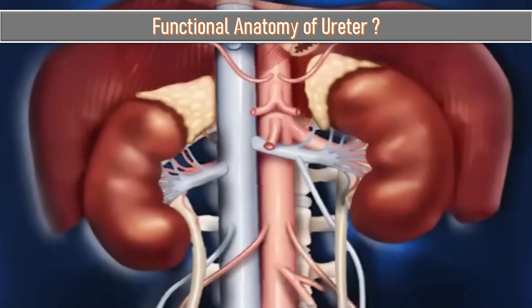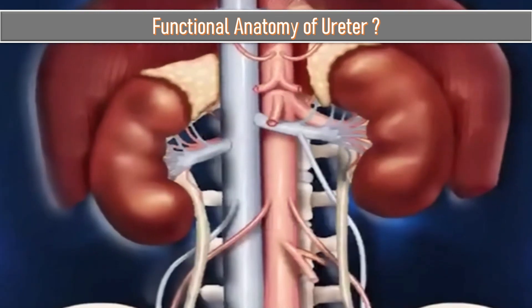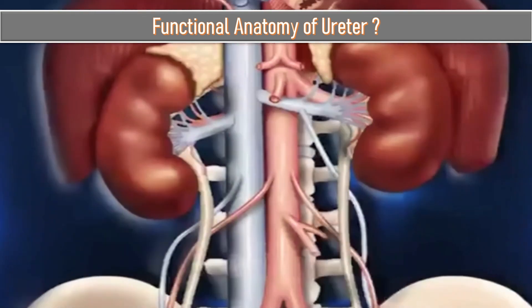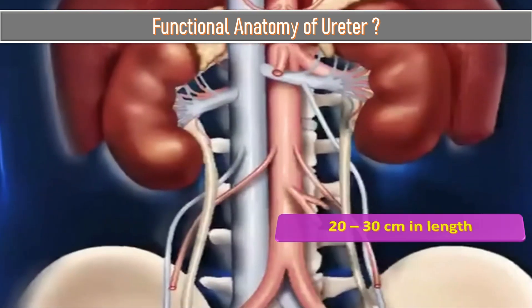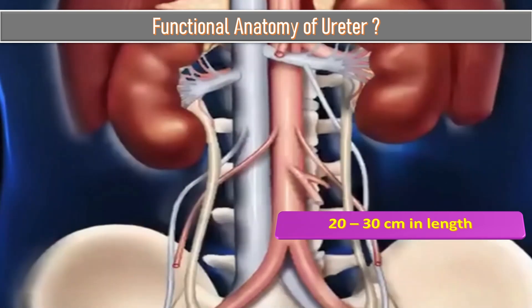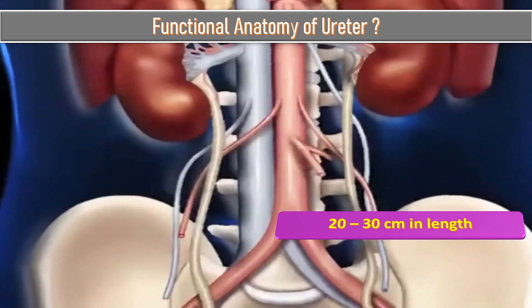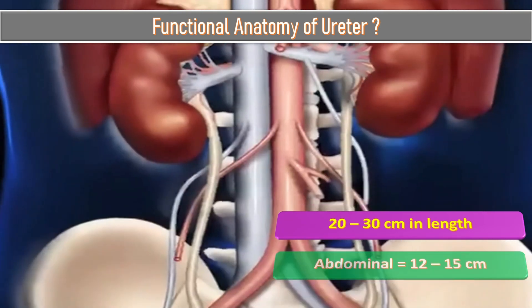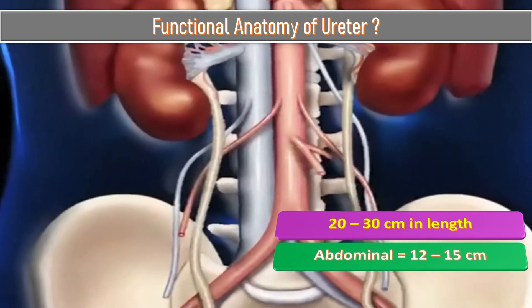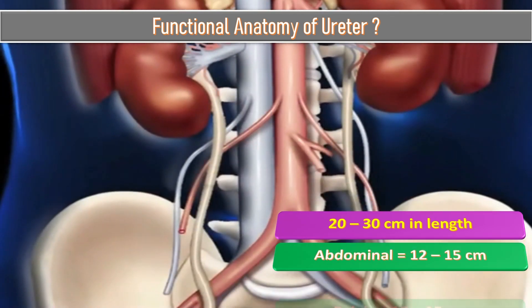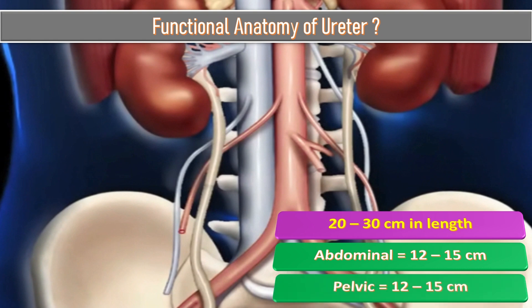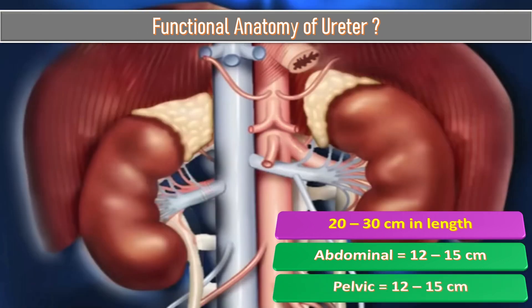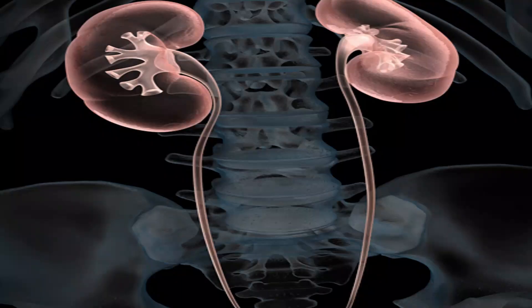In the functional anatomy of the ureter, it is very important to know about its length. The overall length of the ureter is 25 to 30 centimeters. The abdominal part is 12 to 15 centimeters long, and the pelvic part is also 12 to 15 centimeters in length.